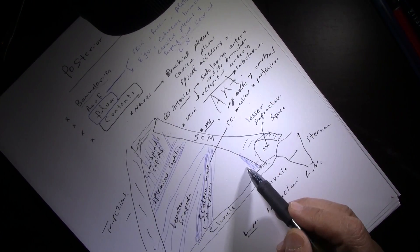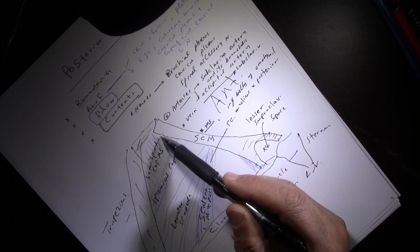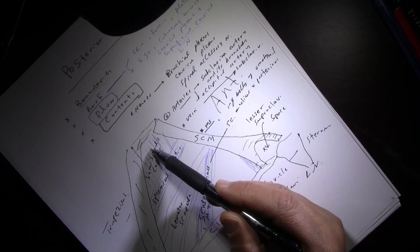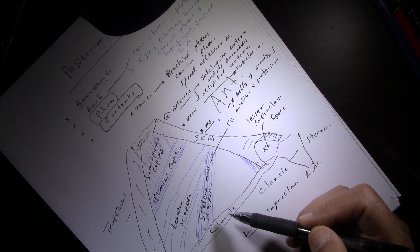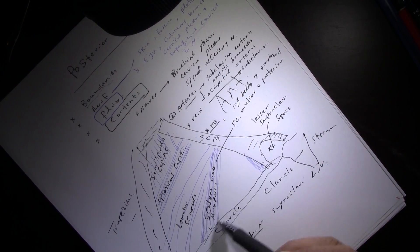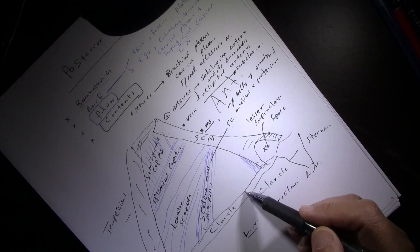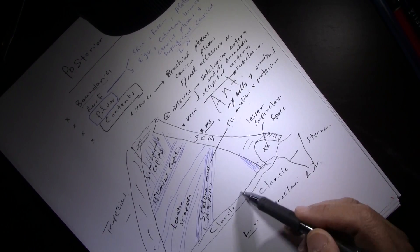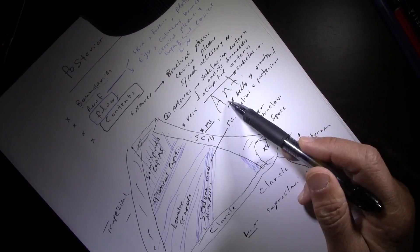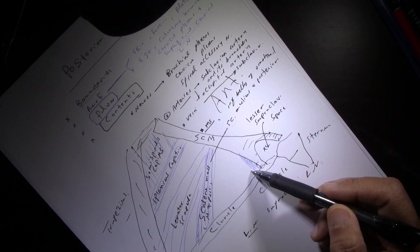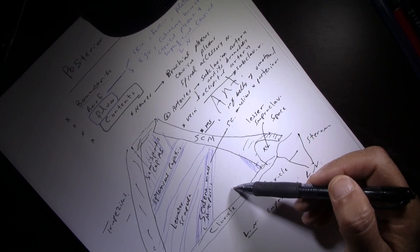The arteries include the subclavian artery in the lower part of the triangle and the occipital artery near the apex. The subclavian vein is also present, though sometimes hidden under the clavicle. There is the inferior belly of the omohyoid muscle, and finally supraclavicular lymph nodes located here. This completes the contents of the posterior triangle.